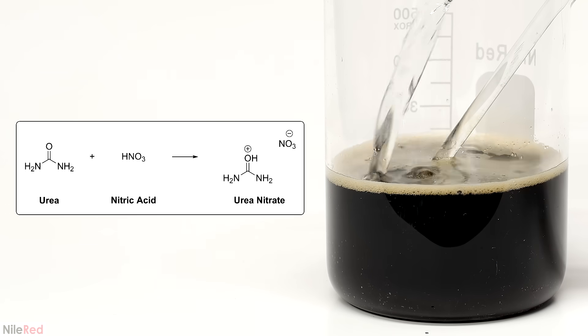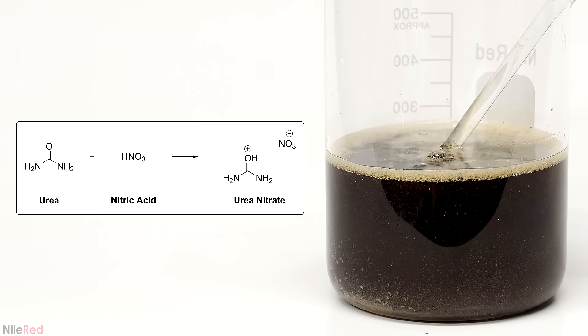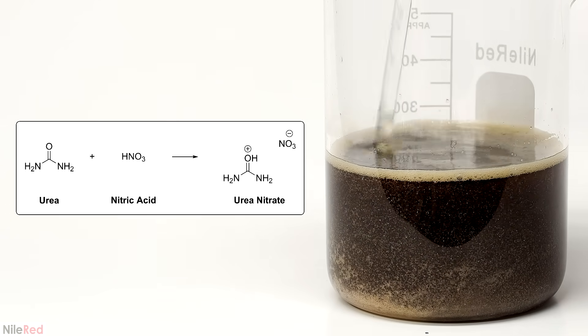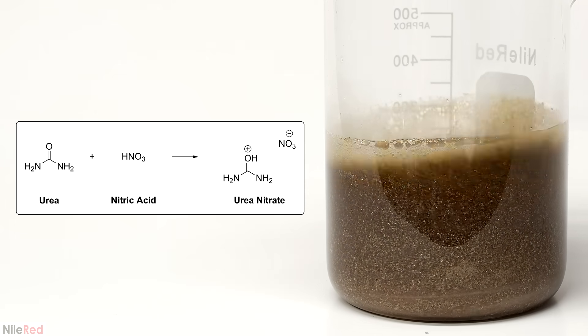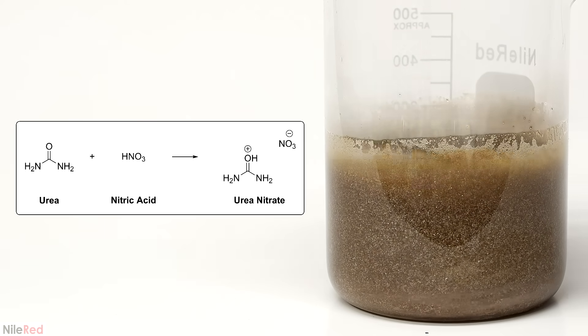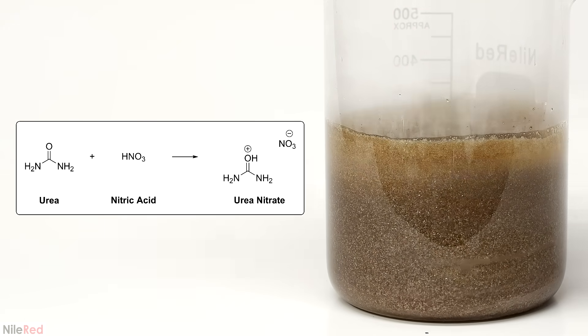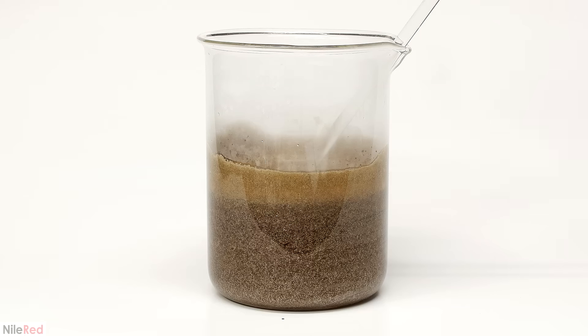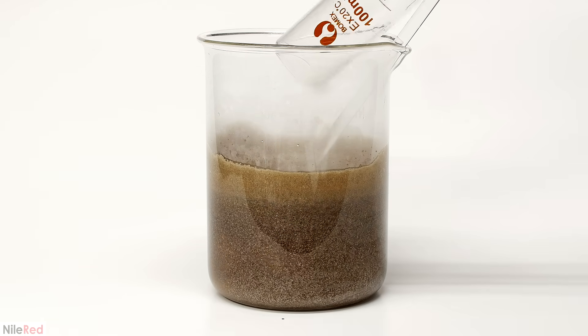The nitric acid quickly reacts with any urea that's present to produce urea nitrate, which is not very soluble in water. The pure form of urea nitrate is white, but unfortunately, as it precipitates, it picks up a lot of colored impurities.